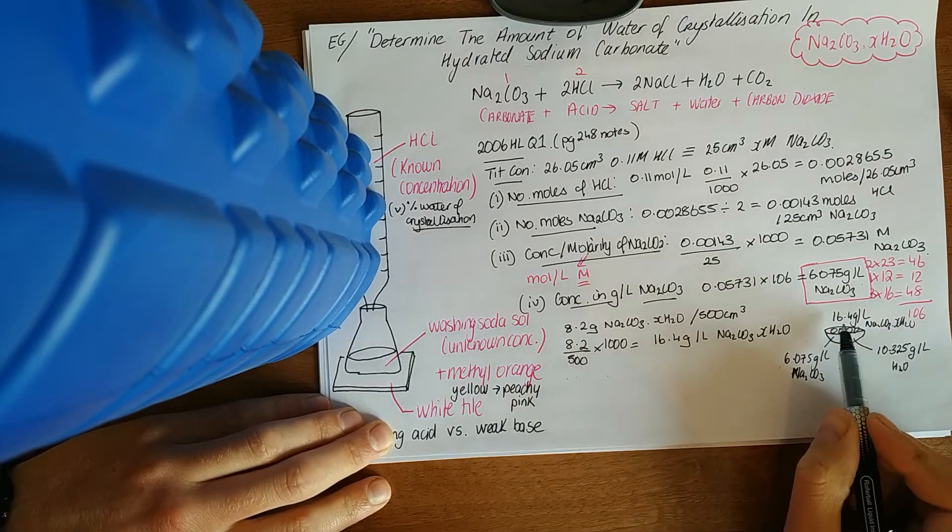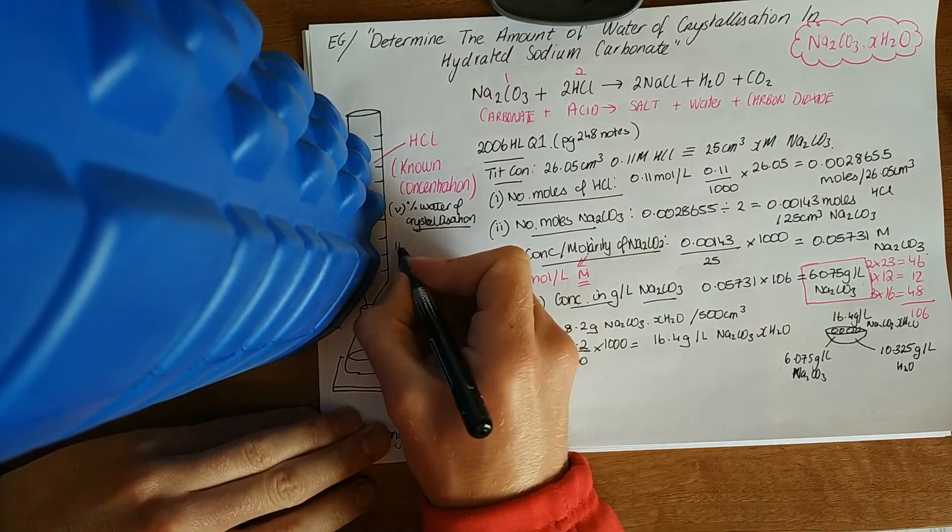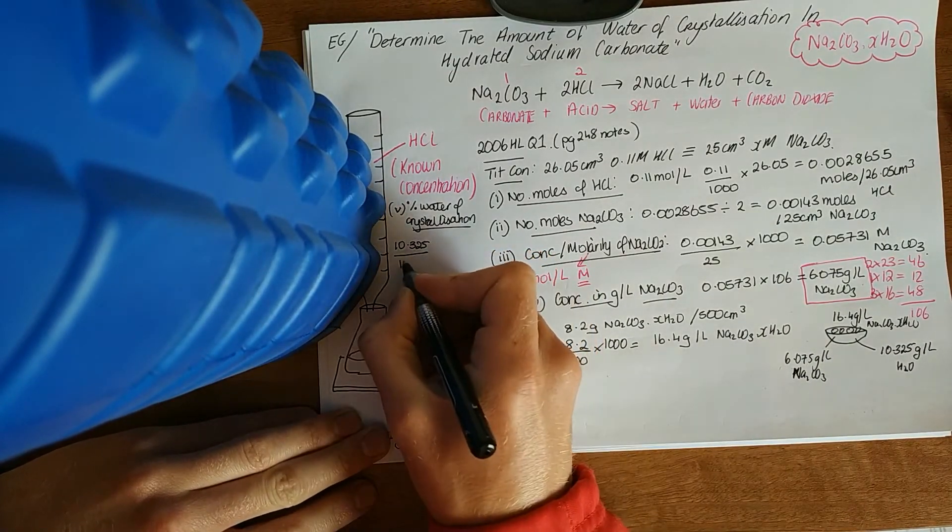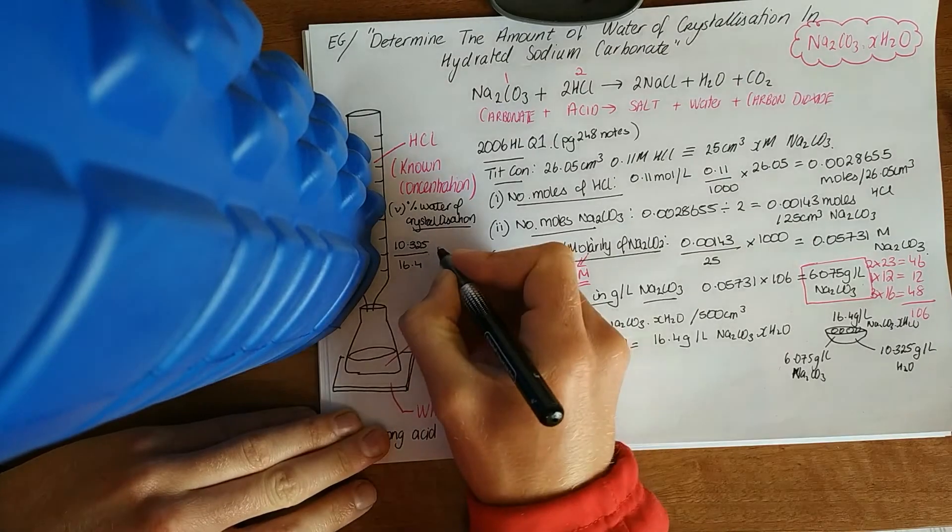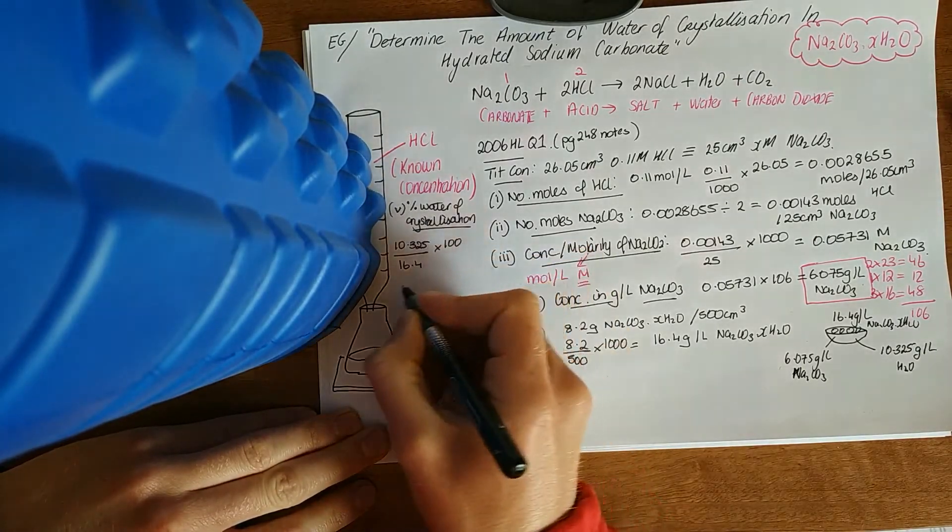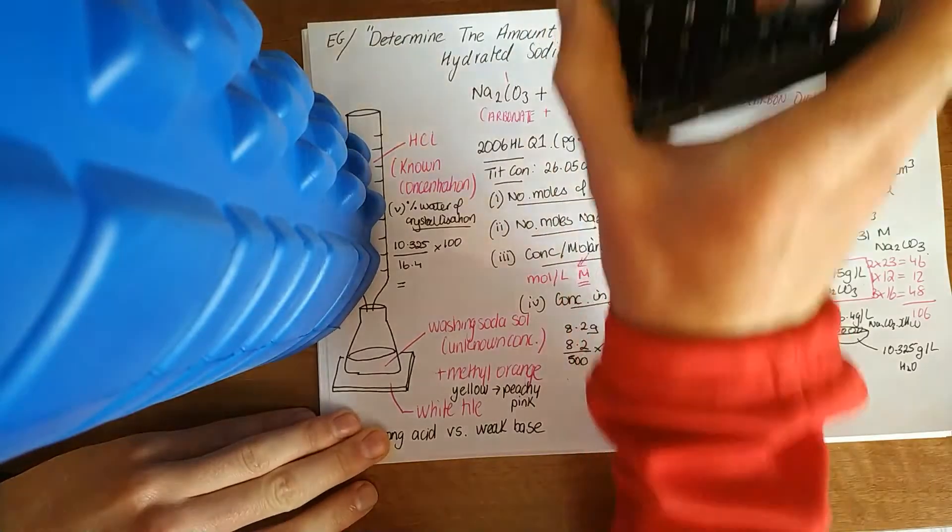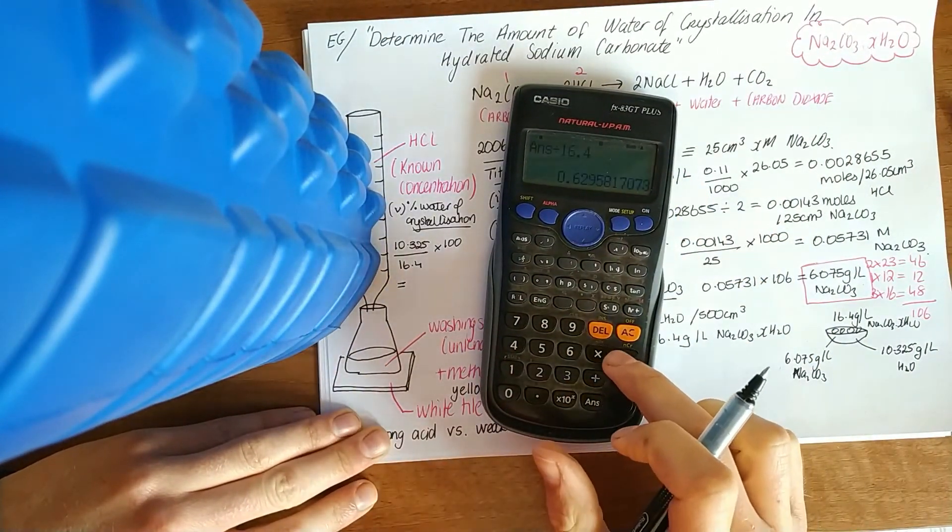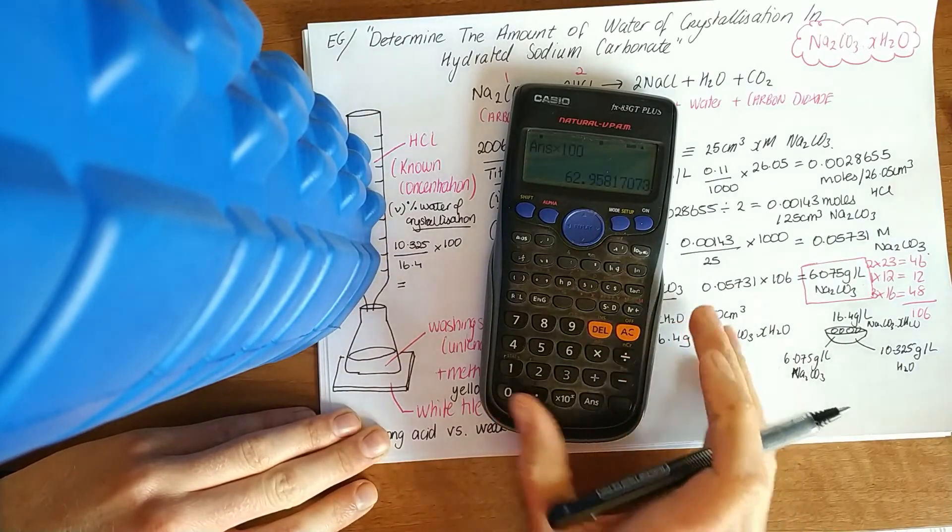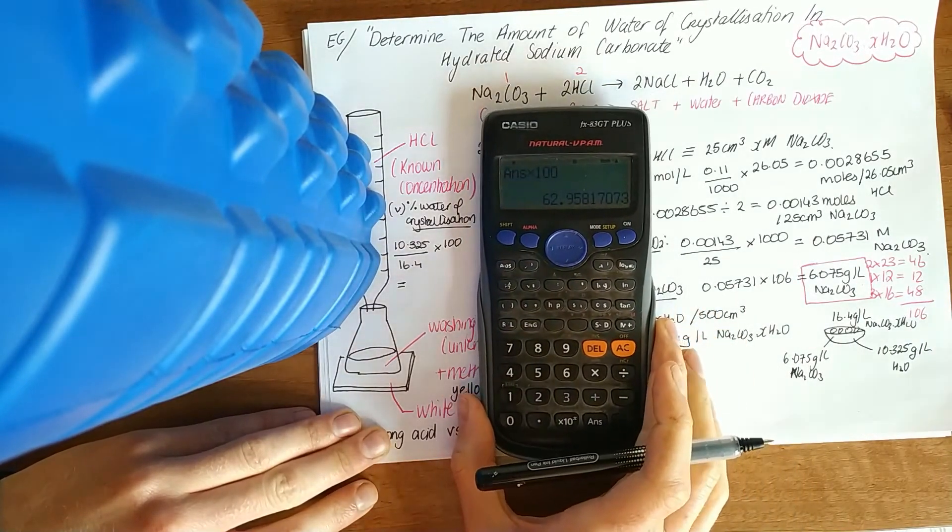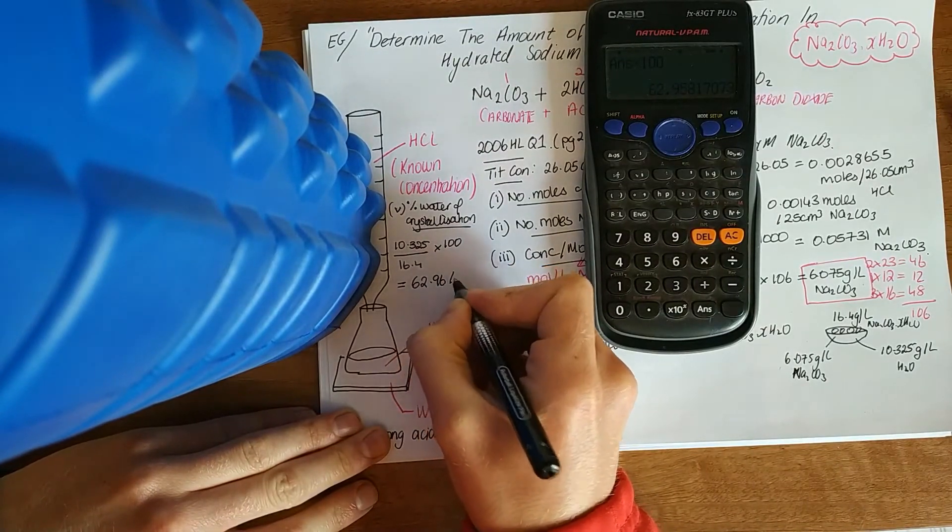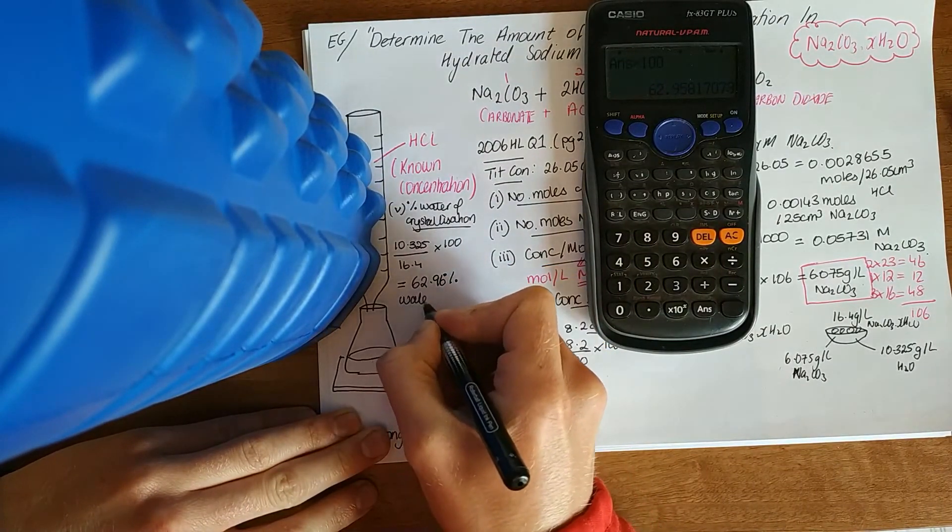Percentage water of crystallization just means how much of the crystals is made up of water. We've got this amount of water in this amount of crystals. So 10.325 in 16.4, and to make anything a percent, times by 100. There's that answer, 10 times by 100. 62.96% water of crystallization.